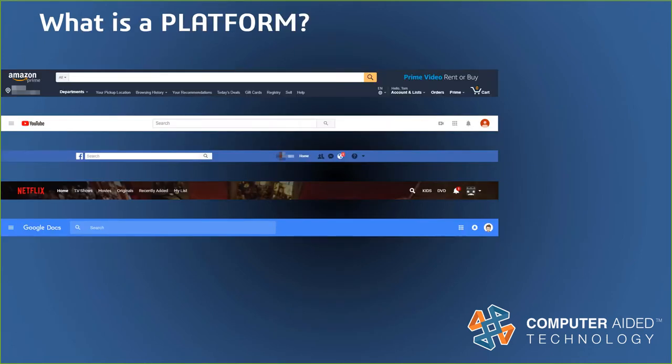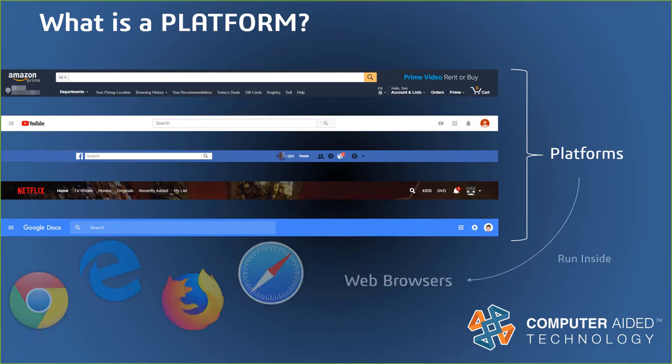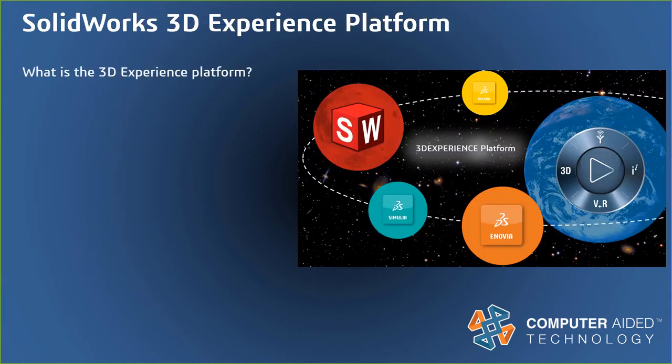Facebook, Amazon, YouTube, Netflix, Google Docs — these are all universal platforms that users are comfortable with. Some of them, like Google Docs, are even considered collaborative platforms, and they all run on a web browser. The 3D Experience platform gets your company connected by providing the tools to bring everyone in the product development process all together. A web-based system of apps allows users to collaborate, manage, and design anywhere at any time on any device. It was built from the ground up with design in mind, but also allows customers to take advantage of many different apps in their everyday workflows.